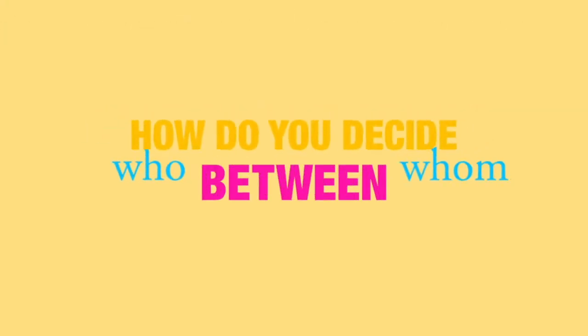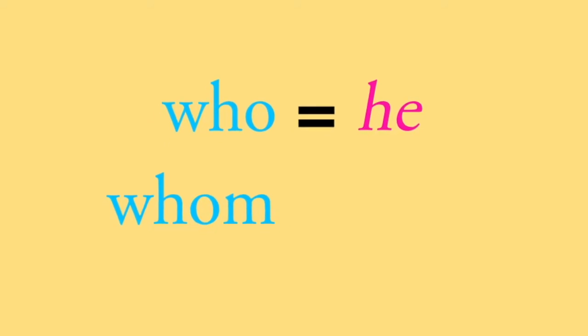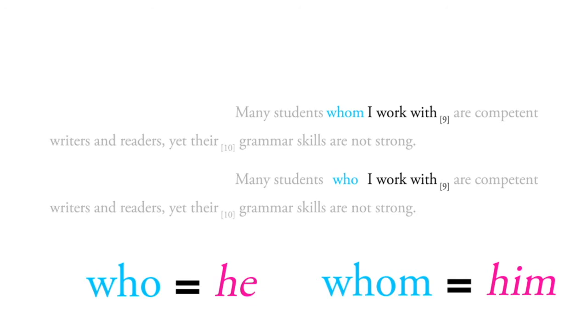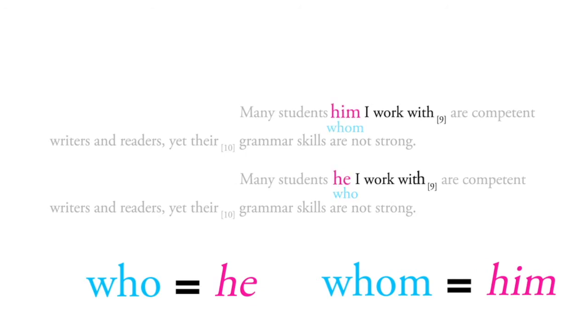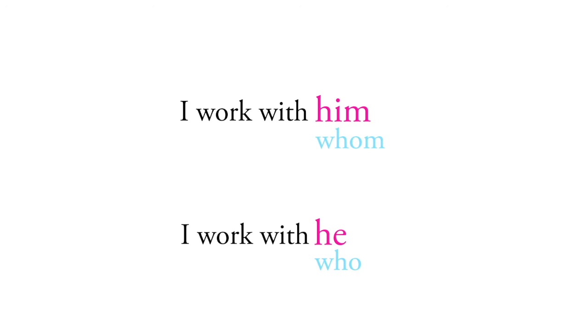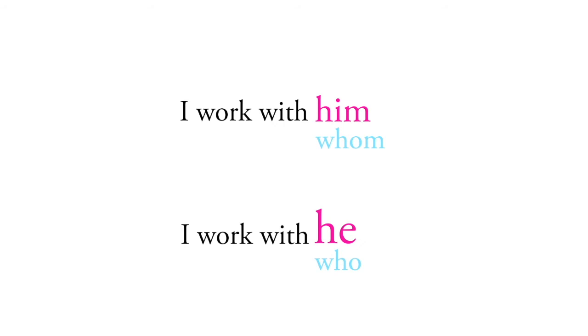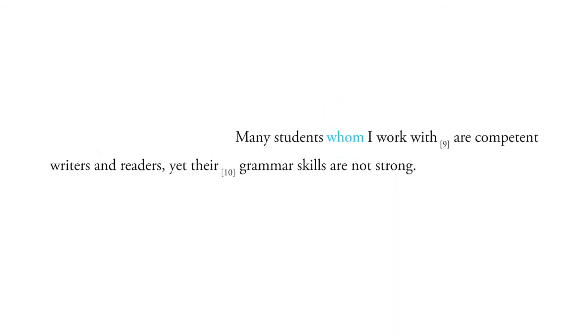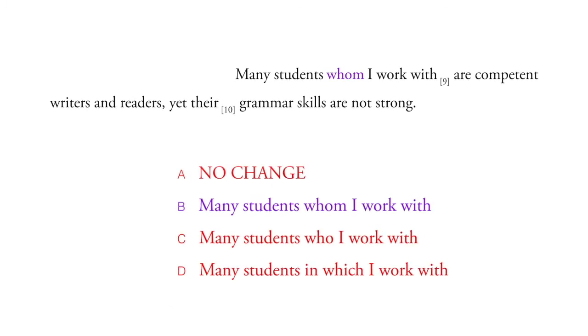So how do you decide between who and whom? Well, there's a really simple trick: who can be replaced with he, and whom can be replaced with him. Let's put those words in and see which sounds better — 'him I work with' or 'he I work with.' Would I say 'I work with him' or 'I work with he'? I would say 'I work with him,' and therefore whom is the correct word. So B is our best choice.